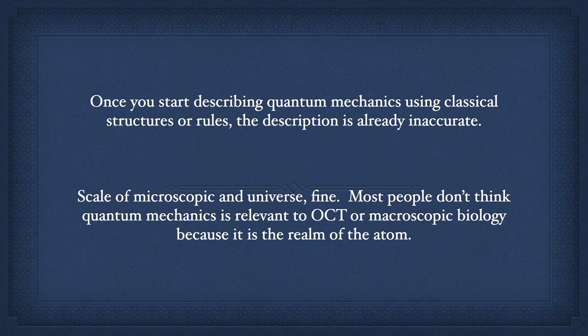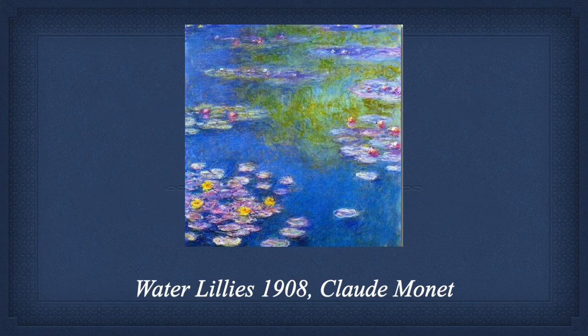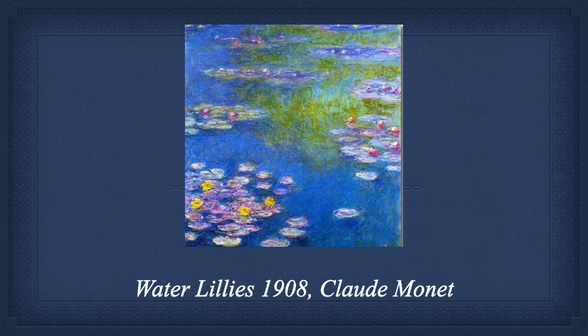The problem is once you start describing quantum mechanics using classical rules or classical descriptions or classical pictures, you've already lost. It's inaccurate and it has to be described mathematically. People get freaked out or in denial when you start talking about macroscopic and mesoscopic quantum systems being sustained over distances, let's say of five feet.